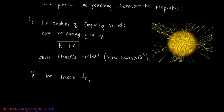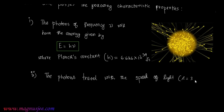Property 2: Photons travel with the speed of light. The speed of light, denoted by small c, is equal to 3 × 10⁸ meters per second in vacuum.